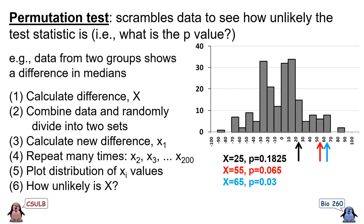If our original difference in medians had been 55, our p-value would be 0.065, which gives the same result but is much closer to significance — we would wonder if we are making a type 2 error. And if our original difference in medians had been 65, the distribution would give us a p-value of 0.03, which would cause us to reject the null hypothesis and conclude the samples appear to come from populations with different medians. Since the p-value is only slightly less than 0.05, we may also wonder whether we are making a type 1 error.